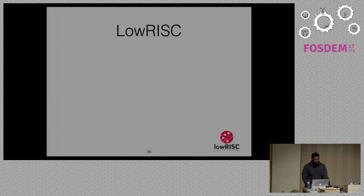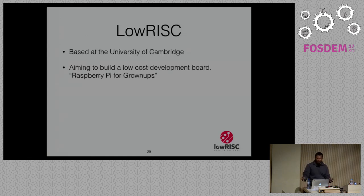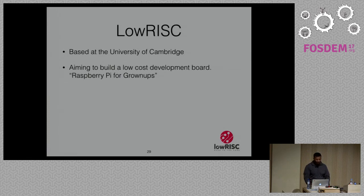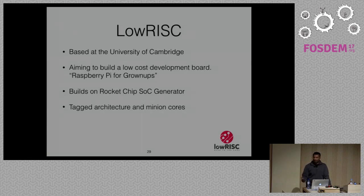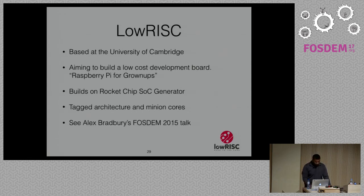The LowRISC project is another interesting RISC-V SOC, based at the University of Cambridge. Their tagline is 'Raspberry Pi for Grown-Ups' — it was founded by one of the founders of Raspberry Pi, aiming to create a completely open version. It builds on the Rocket Chip SOC generator from Berkeley and SiFive. They're doing interesting research on tagged architectures for security and minion cores for IO offload. Check out Alex Bradbury's FOSDEM 2015 talk and follow their progress.